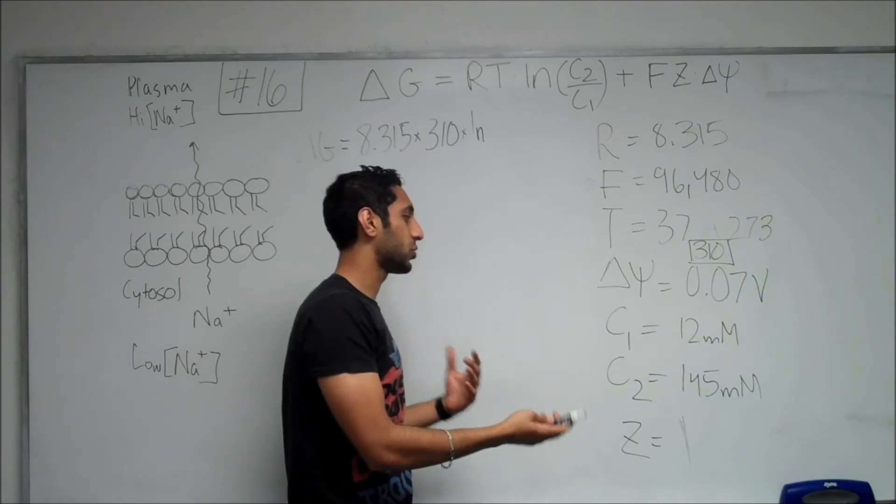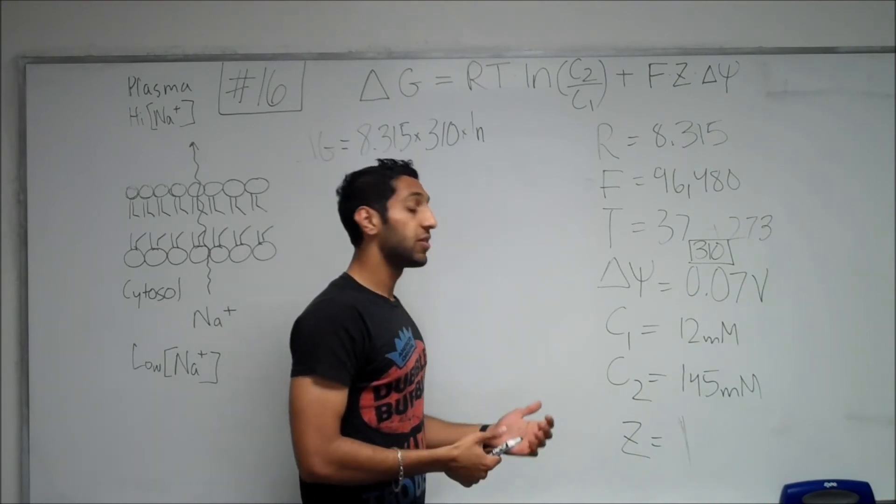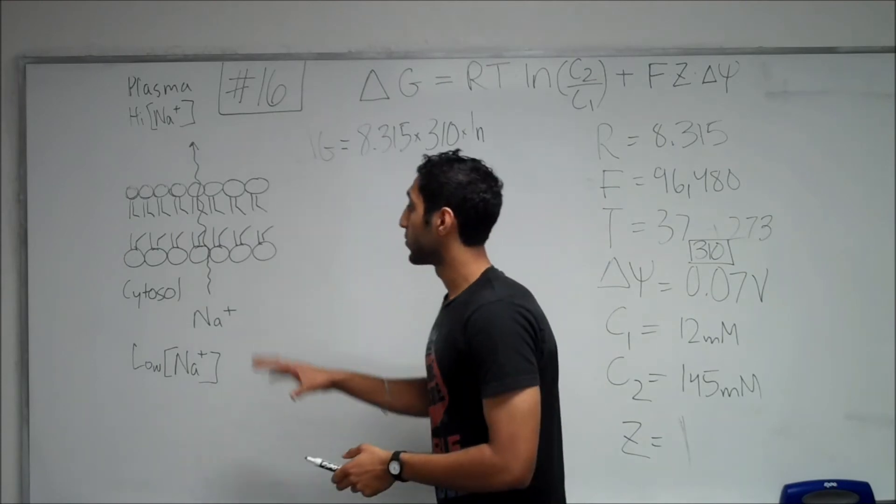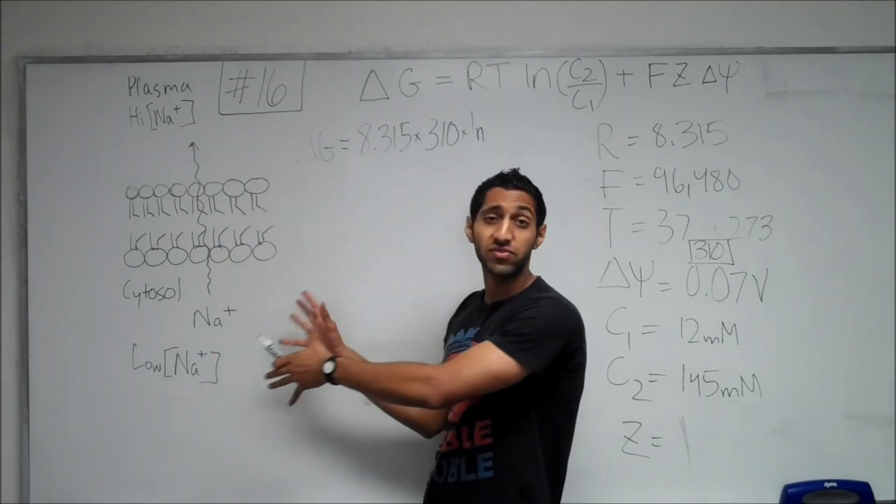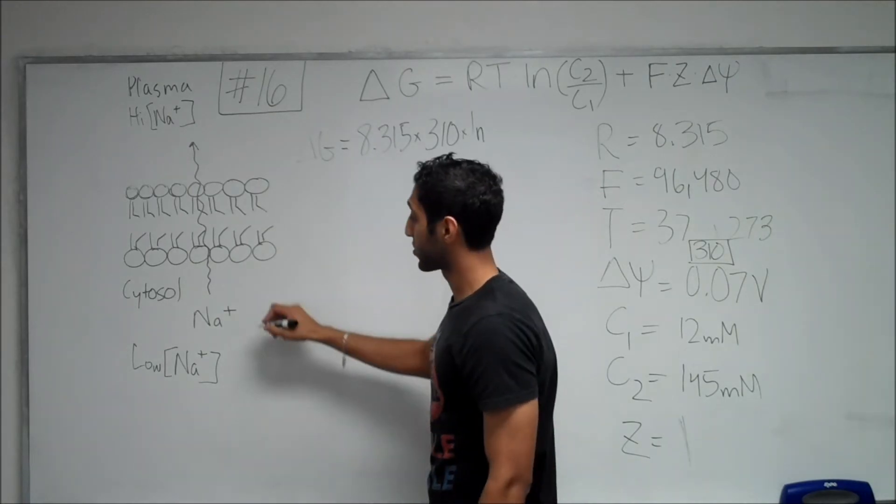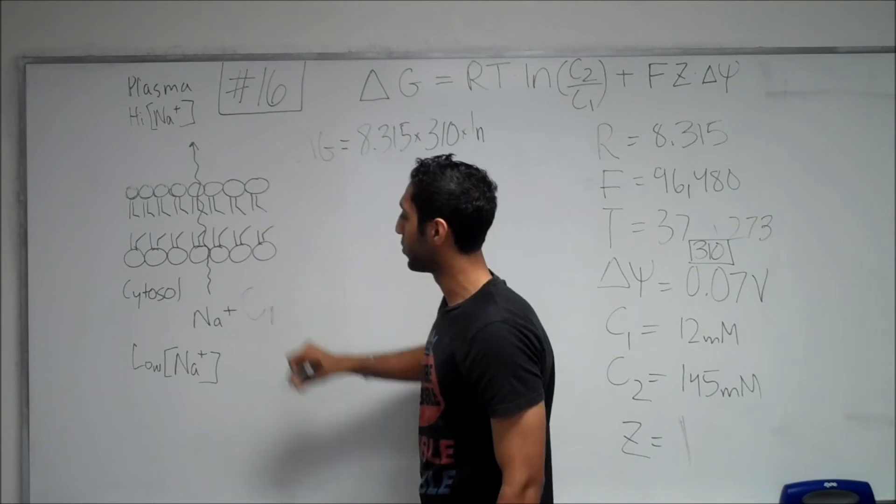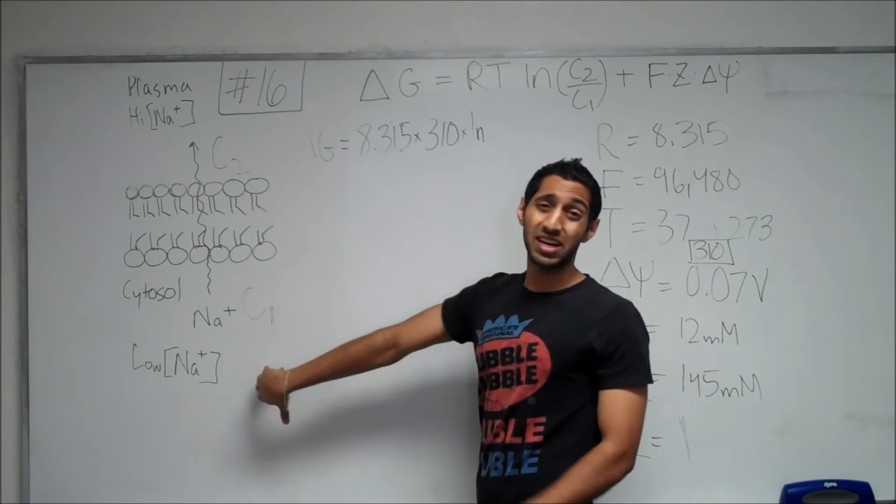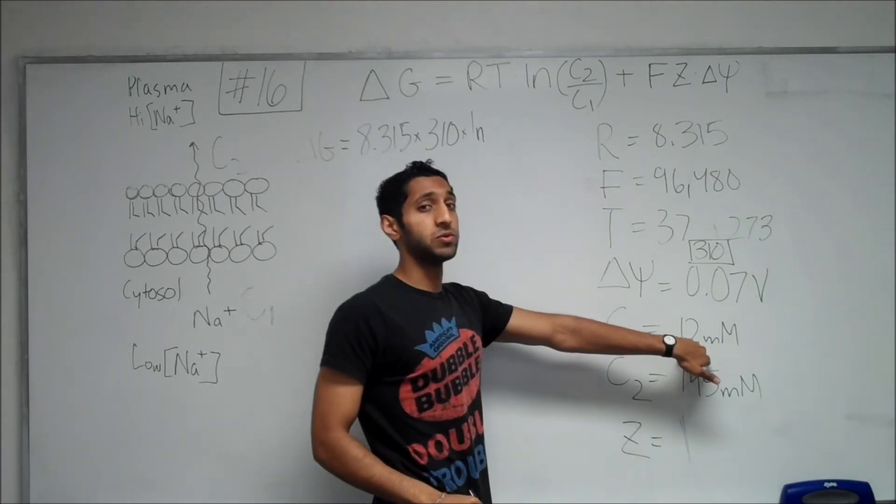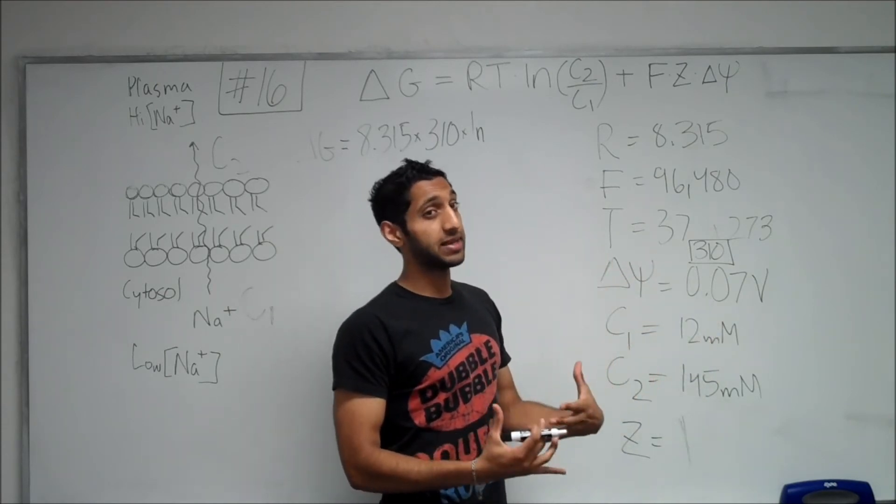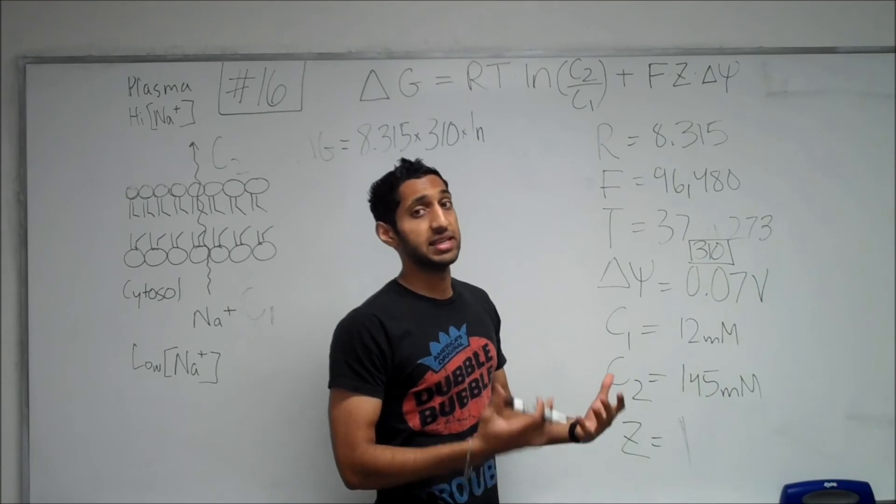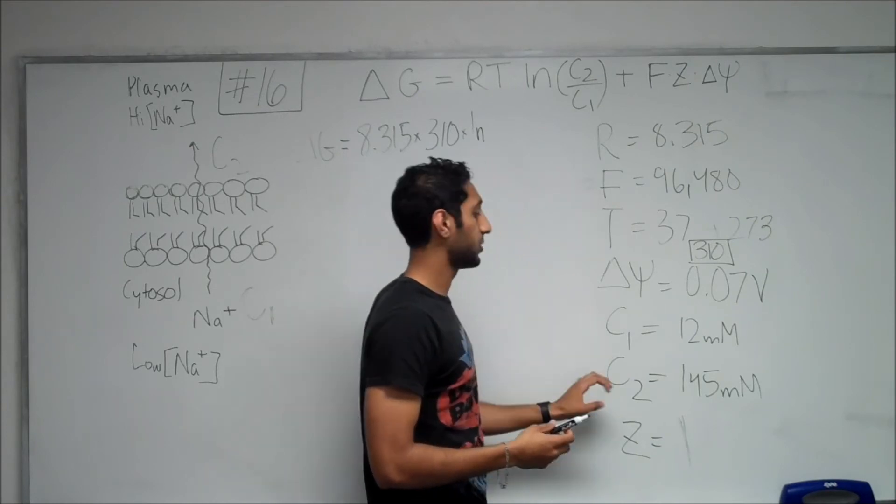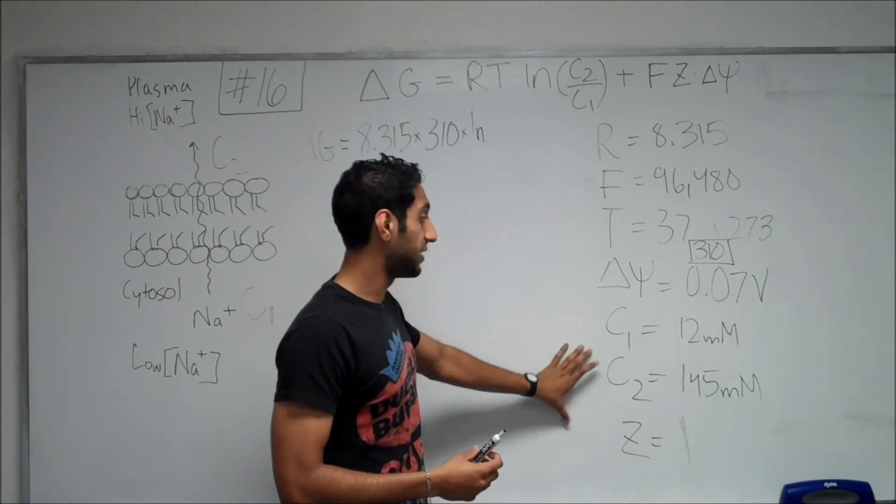Now, one thing that I forgot to mention in the beginning was, how do you know if C1 should be 12 millimoles or 145? The way you figure it out is thinking about where you start and where you want to end up. So, remember, we're trying to move sodium ions from the cytosol into the blood plasma. So, your starting position, which is the cytosol, is going to be C1, and the blood plasma is going to be C2. And so, we know that in the cytosol, or inside the plasma membrane, we have 12 millimoles, because we know that in the cytosol, there are supposed to be less sodium ions than in the blood plasma. So, C1 is for the concentration of the cytosol, C2 is for the blood plasma. Hence, you have these values coordinated.